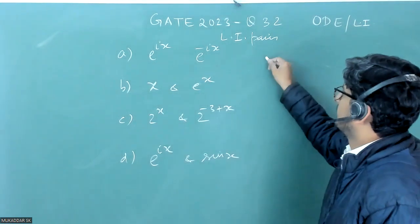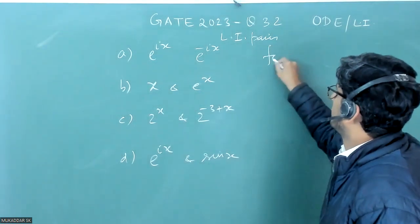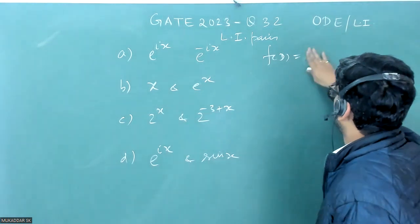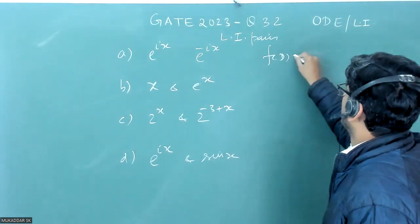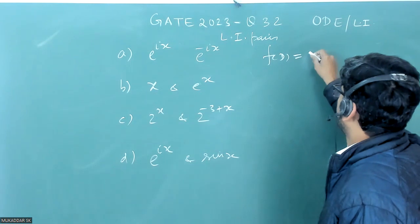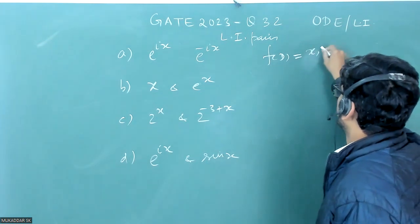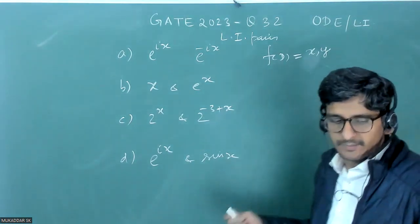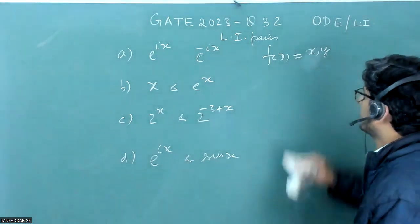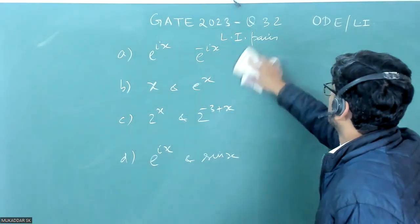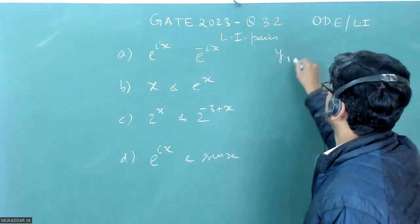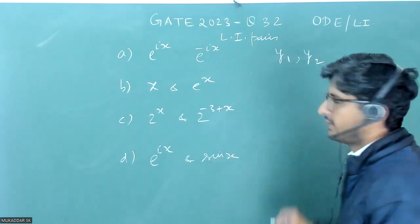So like there is some differential equation suppose fd is equal to y and fd is equal to some function of x comma y. Okay, some function of x comma y and there is some differential equation and they are the solutions. So if it is a second order differential equation and they are some solutions y1 and y2.